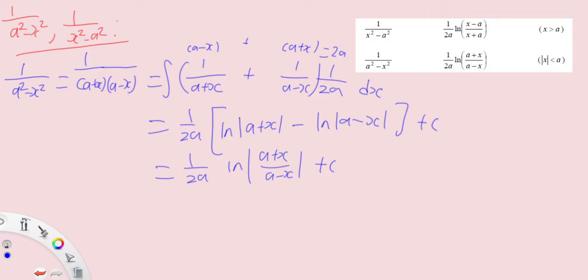The same logic is applied for 1 over x square minus a square, which is simply 1 over 2a, 1 over x minus a plus 1 over x plus a. To verify it, x plus a minus x plus a, so it's basically 2a.